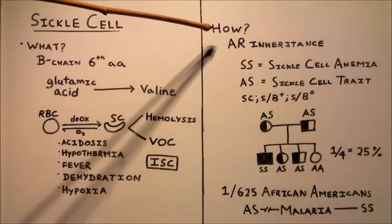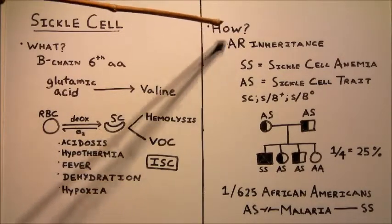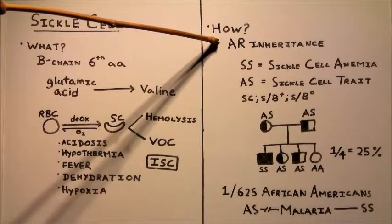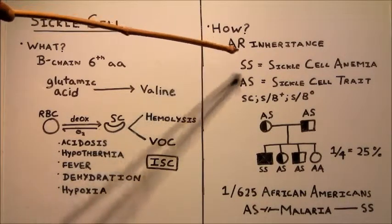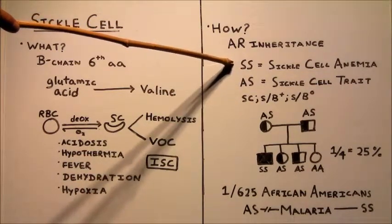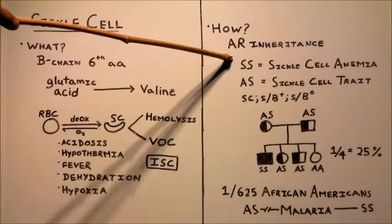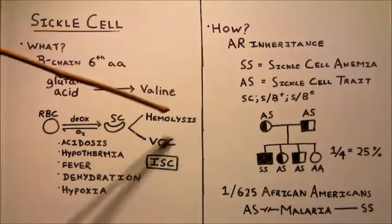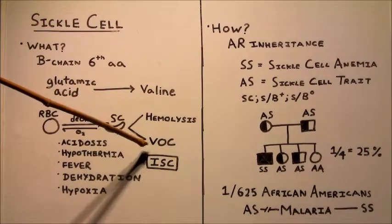So how do we get sickle cell anemia? So sickle cell anemia is inherited in an autosomal recessive pattern, meaning that you need both alleles to get the disease. So here we have both mutated alleles, SS. So this is called sickle cell anemia, and some also refer to it as sickle cell disease. And this is what presents with the hemolysis and vaso-occlusive crises.